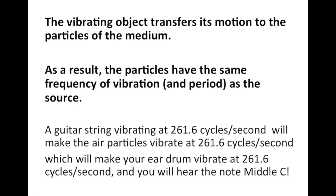As a result, the particles will have the same frequency of vibration and the same period as the source. For example, a guitar string vibrating at 261.6 cycles per second will make the air particles vibrate at 261.6 cycles per second. And then the vibrating air particles are going to make your eardrum vibrate at that same frequency. As a result, you will hear the note middle C.